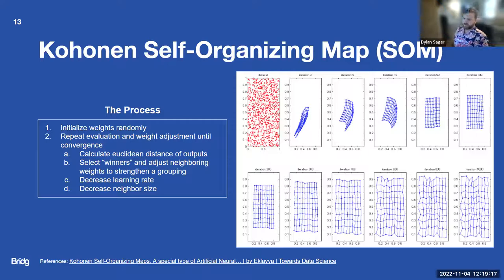Once we get those Euclidean distances after randomly selecting the weights, it identifies winners. Those are the most central points in a group. It takes all the neighbors around them and converges them. It adjusts the underlying weights for them to converge into a group a little bit better. Then it's going to decrease the learning rate and decrease the neighbor size, making it less aggressive over time. It's going to repeat that until it's converged.